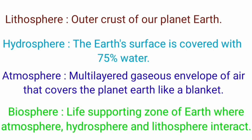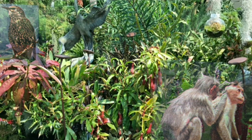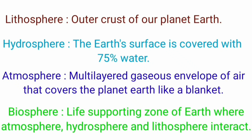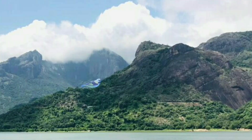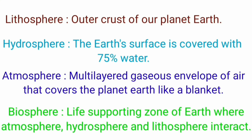The atmosphere is the multi-layered gaseous envelope of air that covers the whole earth like a blanket. Biosphere is the life-supporting zone of the earth where the atmosphere, hydrosphere and lithosphere interact and make life possible. Living things like plants and animals are called biotic components of biosphere, whereas non-living things — air, water and land — form the abiotic components of biosphere.